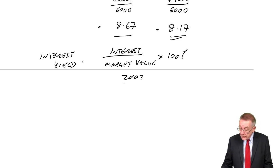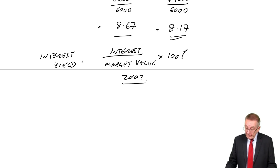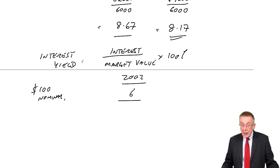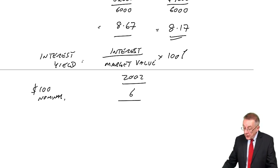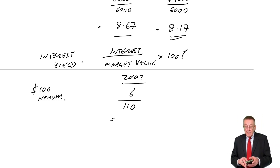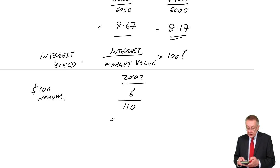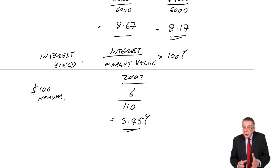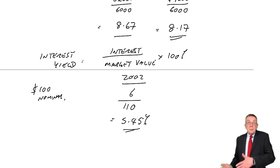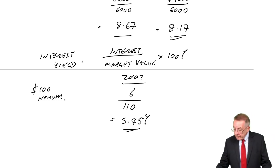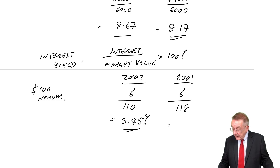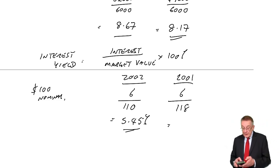In 2002, the interest on $100 nominal is the coupon rate from the statement of financial position: $6. The market value in 2002 is $110, so anyone thinking of buying these debentures on the stock exchange would be getting a return of 5.45% year by year. In 2001, the interest was still 6% of nominal, but the market value was $118, so last year they'd have been getting 5.08%.